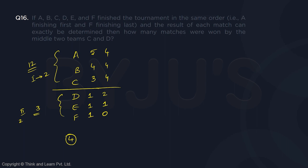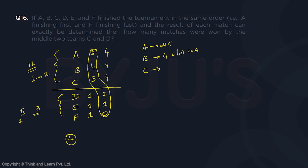If we have 5, 4, 3 and 2, 1, 0: if it is 5, A won all 5 matches. B got 4 meaning B won 4 and lost to A, so B won against C, D, E, F. C got 3 — it lost 2 matches, which are to A and B, so C won against D, E, F. D got 2 meaning it won against E and F. E got 1 meaning it won against F. F lost all matches. So we can clearly tell what is happening in this case.